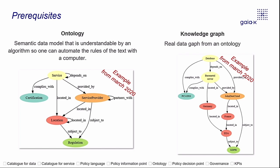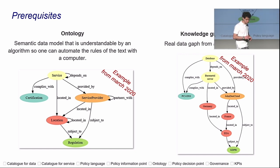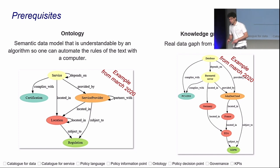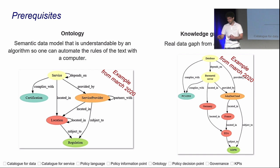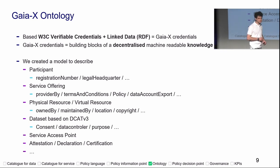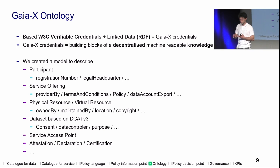A bit of prerequisite. Two words I will use: ontology and knowledge graph. An ontology is a semantic data model to represent a domain. GAIA-X has an ontology. A knowledge graph is like the instance of the ontology. GAIA-X developed their ontology. We translated the requirements — no lock-in, no lock-out, cheap, reliable — into something tangible. We use verifiable credentials and linked data to build a decentralized knowledge graph where every party holds part of that graph, and during negotiation you combine all those atomic pieces of information.